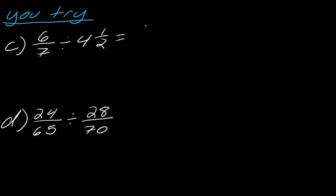Okay, so for C, the first thing that I've got to do is I've got to rewrite 4 and a half as an improper fraction. So, I'm going to take 4 times 2, which is 8, plus 1. So, that's going to be 9. So, this is going to be rewritten as 9 over 2.